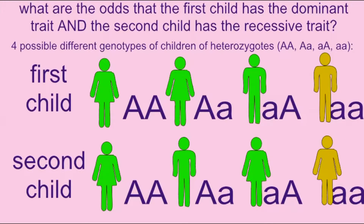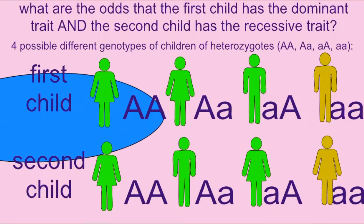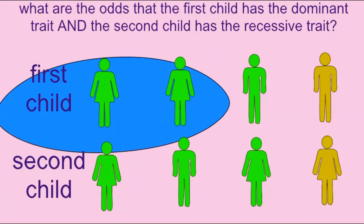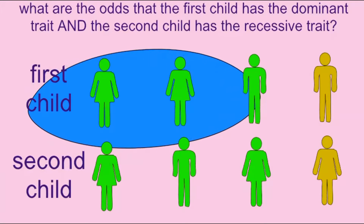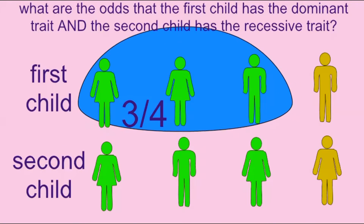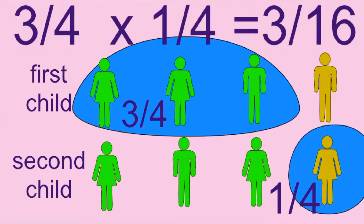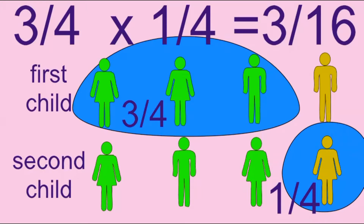The probability that the first child possesses the dominant trait and the second child will possess the recessive trait can be obtained by multiplying the odds that the first child possesses the dominant trait, which is three in four, times the odds that the second child possesses the recessive trait, which is one in four. So three-fourths times one-fourth is equal to three-sixteenths.